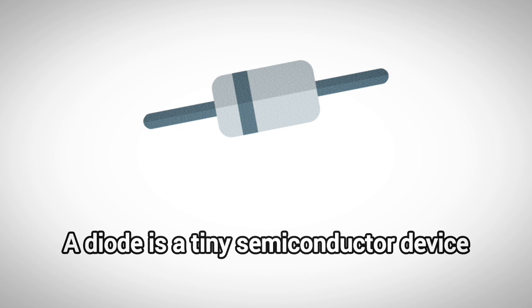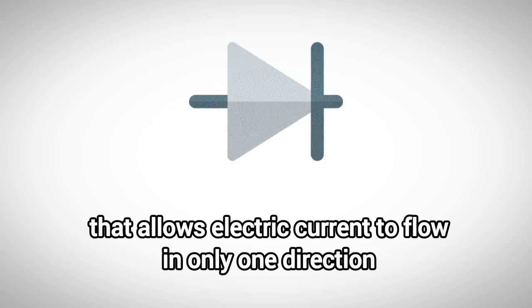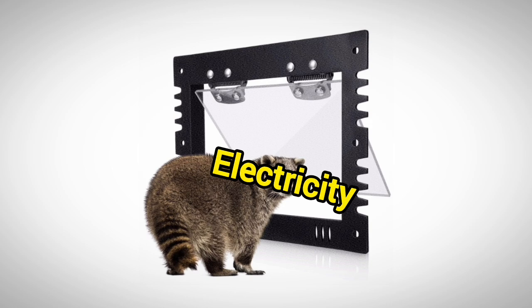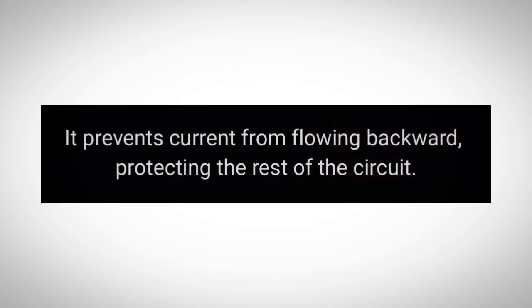Now let's begin with one of the simplest active components, the diode. A diode is a tiny semiconductor device that allows electric current to flow in only one direction. You can think of it as a one-way door for electricity. It prevents current from flowing backward, protecting the rest of the circuit.